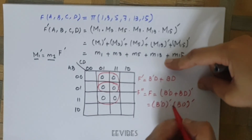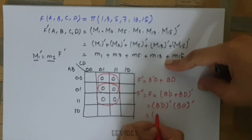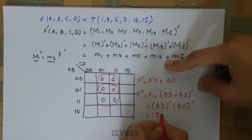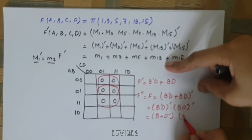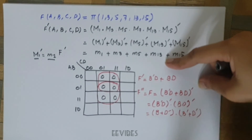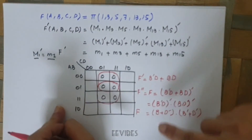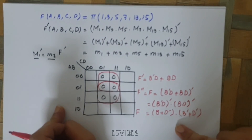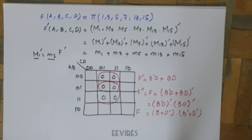Applying DeMorgan's theorem to the individual terms, this equals (b + d')(b' + d'). Hence the given function has been represented as the Product of Sums. If you have any questions, you can drop them in the comment section. Thank you for watching.